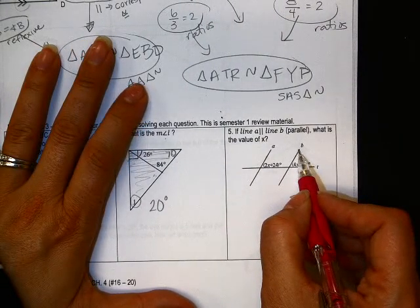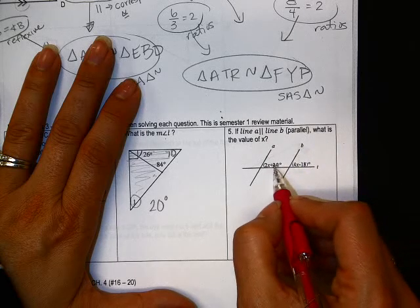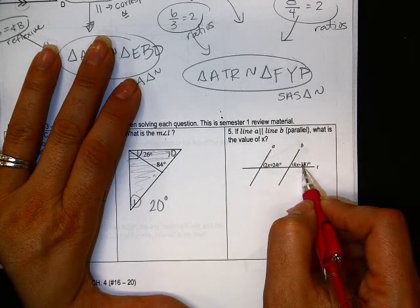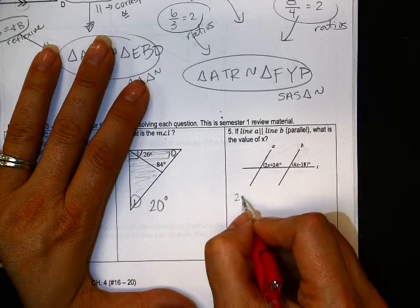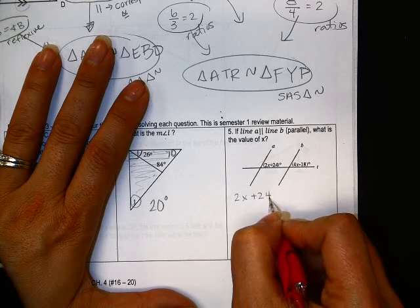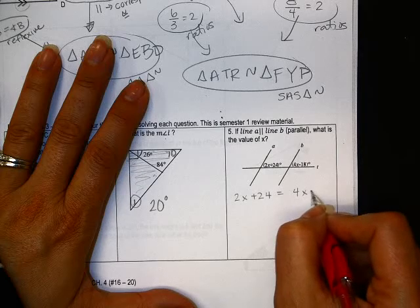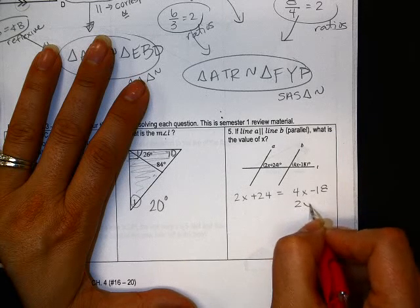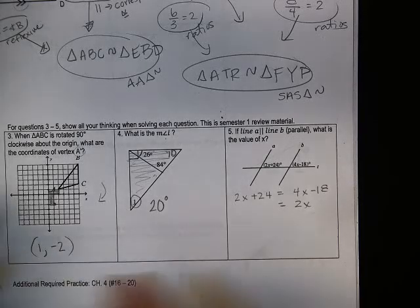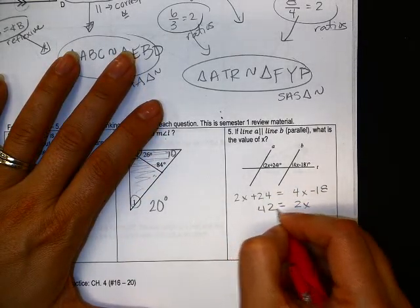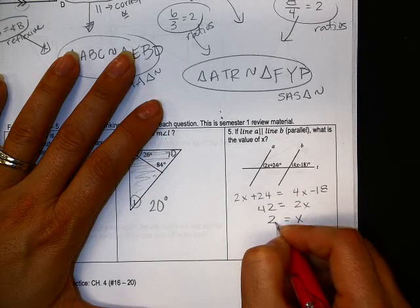Alright, these guys are parallel to each other, and we want to find the value of x. So these guys here is just really corresponding angles, right? So 2x plus 24 is totally equal to 4x minus 18. That is 24 plus 18, 42. And x would equal to 21.